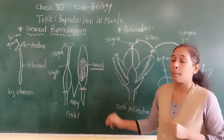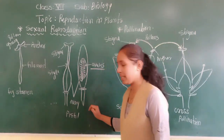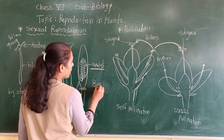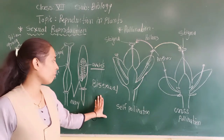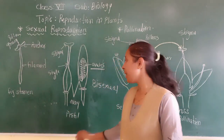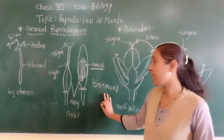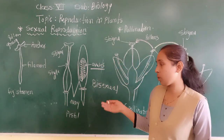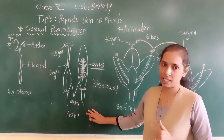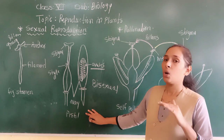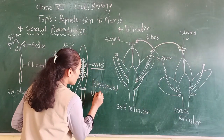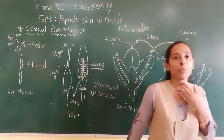This is all about the flower. In certain flowers, if both the stamen and the pistil are present, then that flower is called a bisexual flower. If the flower contains only one type of reproductive organ — either stamen is present but pistil is absent, or pistil is present but stamen is absent — then that type of flower is called a unisexual flower.